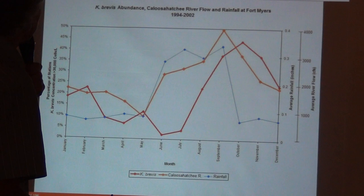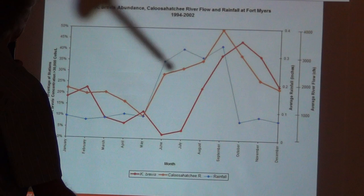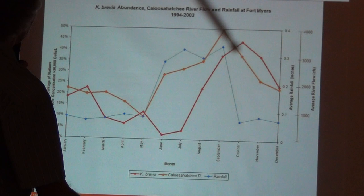This is seasonality of red tide. Caution: this is a little bit misleading because every year is different, but this is just an average. From January through December, blue is rainfall — here's your dry season, here's your wet season, back to dry.